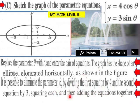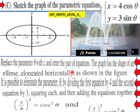Squaring each and then adding the equations together. So here we have X over 4 quantity squared equals cosine squared θ, and we have Y over 3 quantity squared equals sine squared θ.